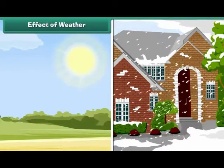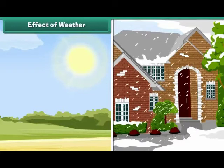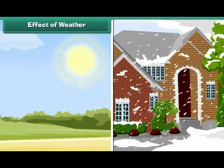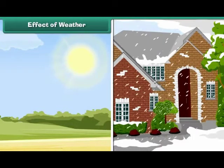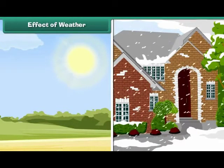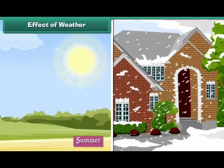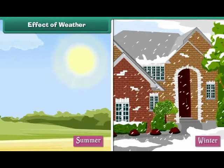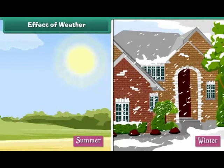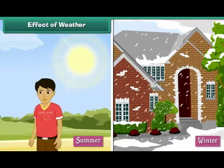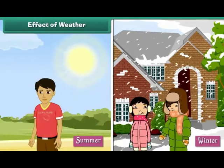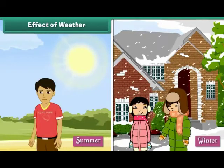Weather affects us in many ways. For example, we wear clothes according to the prevailing weather conditions. We wear cotton in summers and woolens in winters.